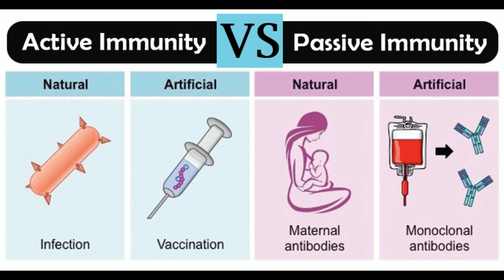Difference 16 — Use: Active immunity is very effective for prophylaxis of diseases. Artificial passive immunity is effective as a post-exposure treatment. Difference 17 — Effectiveness of protection: Active immunity provides effective protection, whereas passive immunity protection is less effective and may not be complete. Difference 18 — Adverse effects: Active immunity can be implicated in autoimmune diseases and allergies, but generally does not have side effects. In passive immunity, a condition called serum sickness can result from exposure to antisera.